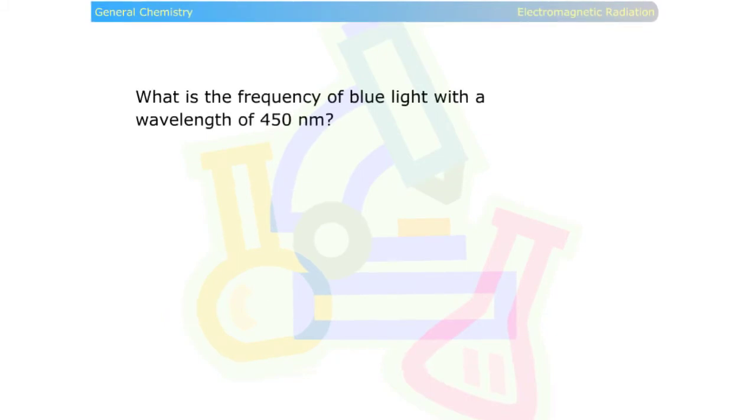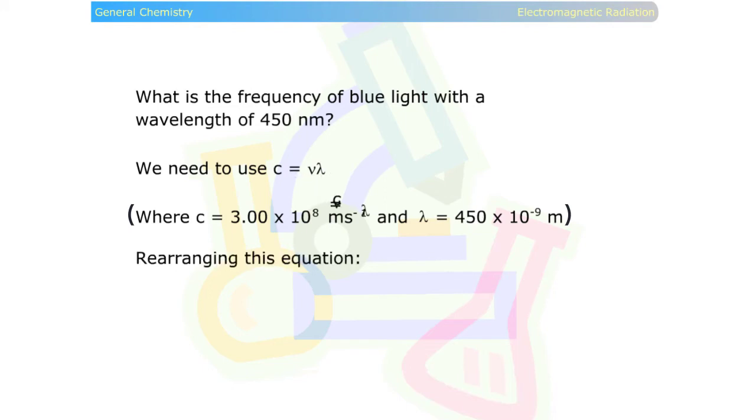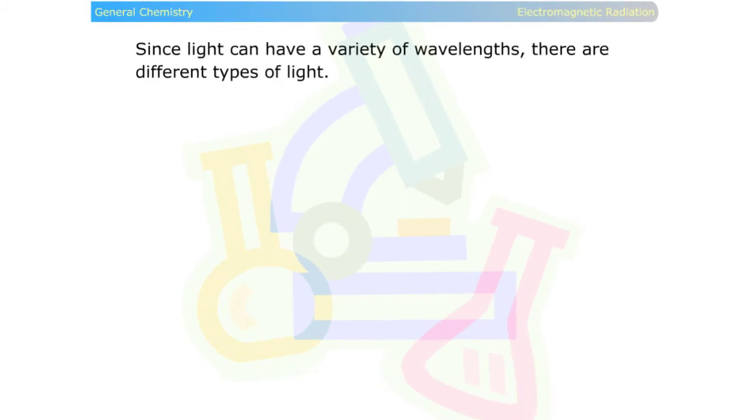What is the frequency of blue light with a wavelength of 450 nanometers? We need to use c equals frequency times wavelength. Rearranging this equation, we have frequency equals the speed of light divided by wavelength.